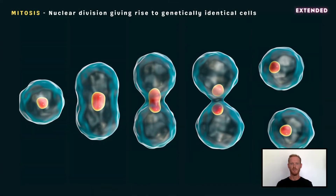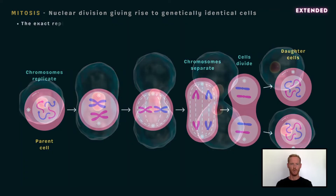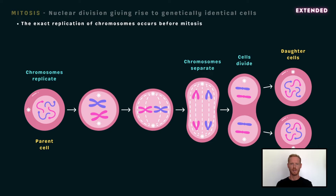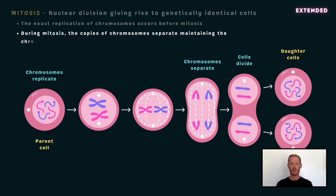Mitosis can be defined as nuclear division giving rise to genetically identical cells. Before a cell divides by mitosis, the chromosomes contained within the nucleus replicate, producing two exact copies of each chromosome. The copies of chromosomes then separate, maintaining the chromosome number in each daughter cell.